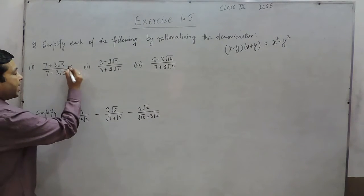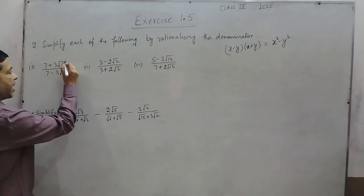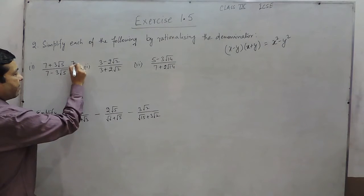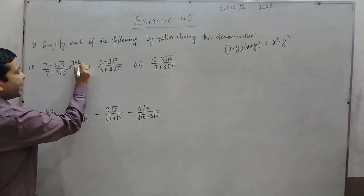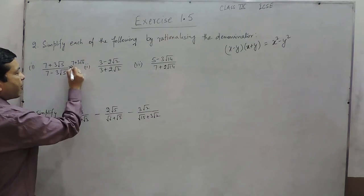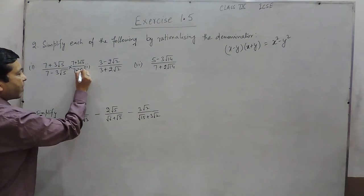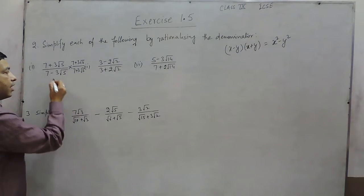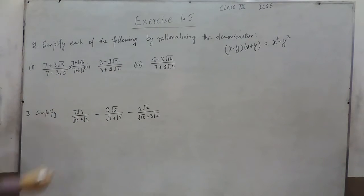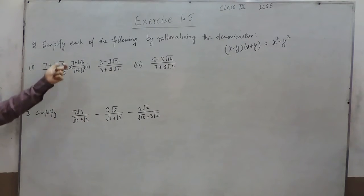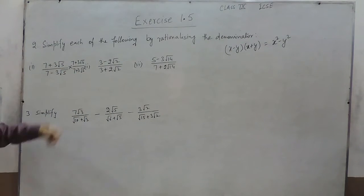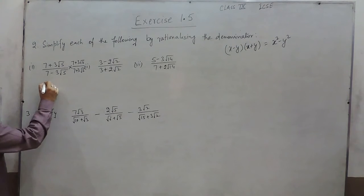So we multiply by (7 plus 3 root 5) upon (7 plus 3 root 5), where 7 minus 3 root 5 is already the denominator. So we are multiplying by the conjugate.